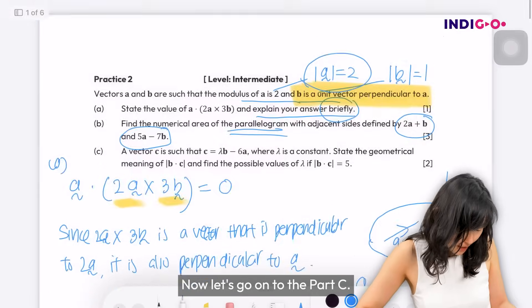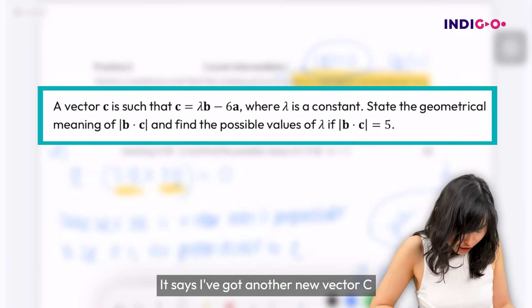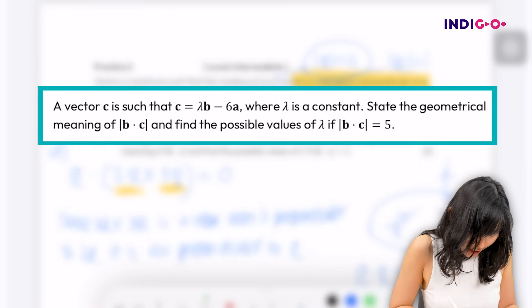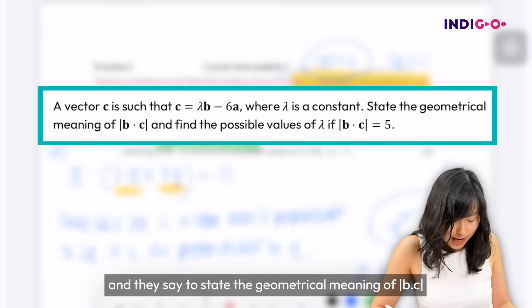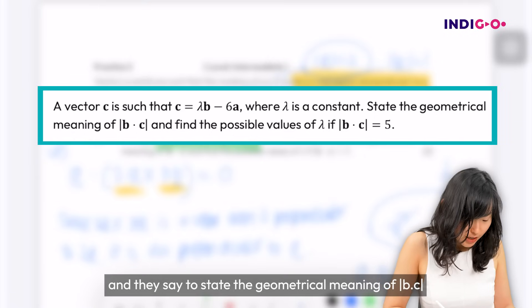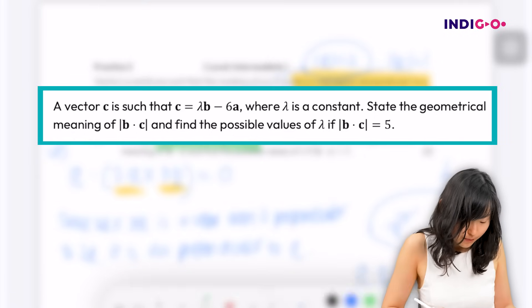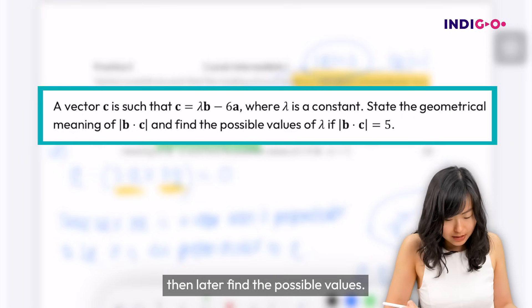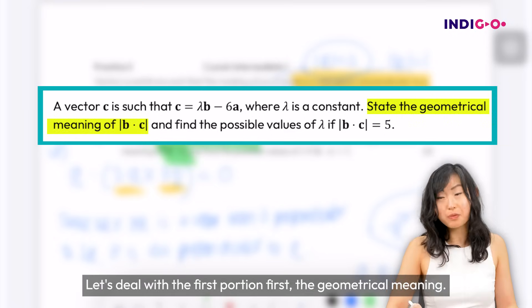Now let's go on to part c. It says I've got another new vector c and it's given by that where lambda is a constant and they say to state the geometrical meaning of b dot c then later find the possible values. Let's deal with the first portion first, the geometrical meaning.